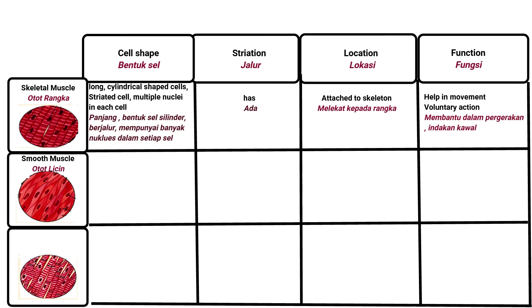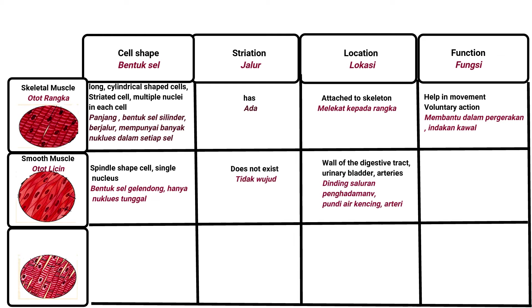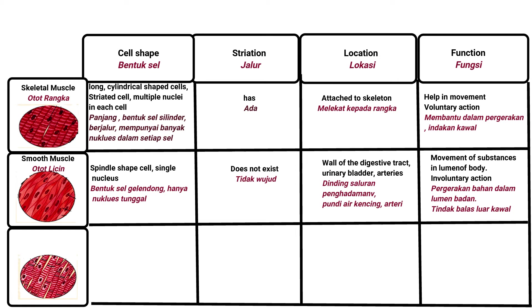Smooth muscle — cell shape: spindle-shaped cell with a single nucleus; no striations. Location: walls of internal organs. Function: movement of substances in the human body; involuntary actions.